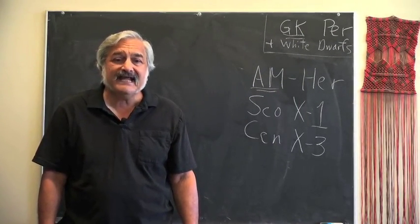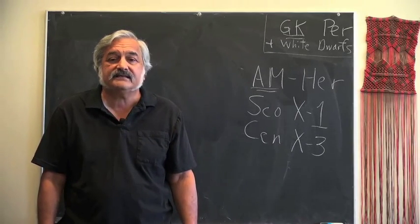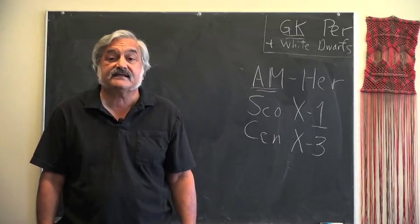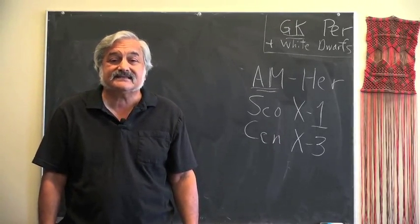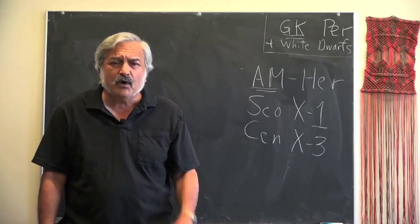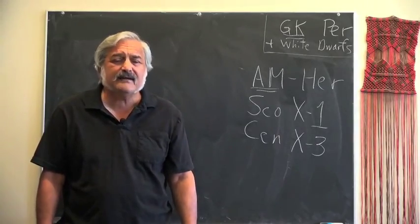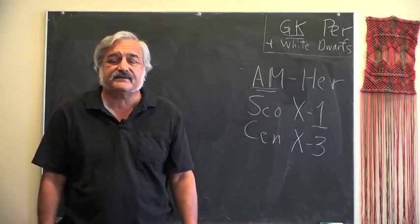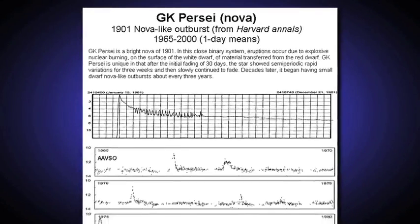However, decades after its spectacular outburst, Nova Persiae 1901, also designated G.K. Per, began in 1966 to display smaller outbursts of about three magnitudes in amplitude, occurring about every three years. You can see them in this long-term light curve shown here.